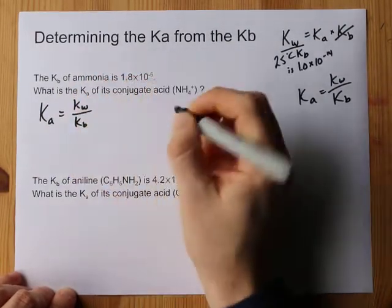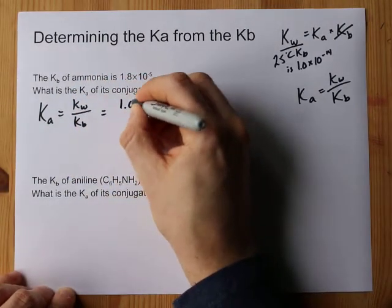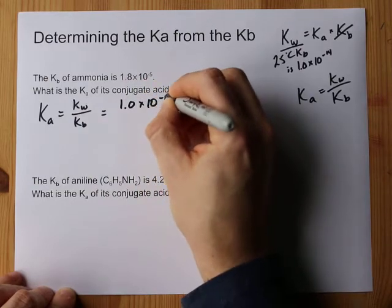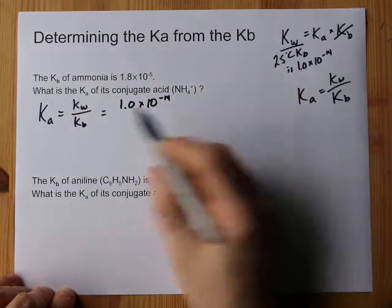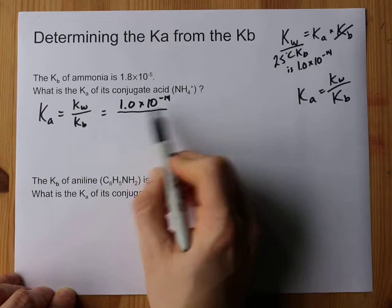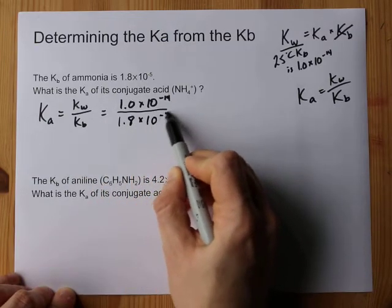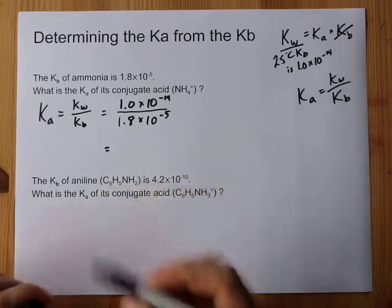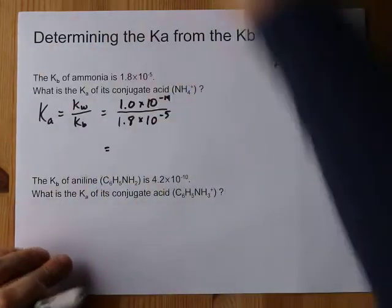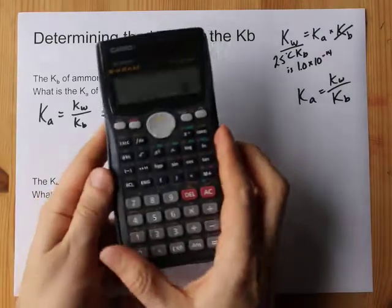I'm gonna write out my formula. That's 1.0 times 10 to the negative 14 for my Kw and the Kb is given. That's 1.8 times 10 to the negative 5. I'm going to do this on the calculator. Let me show you how I do that.